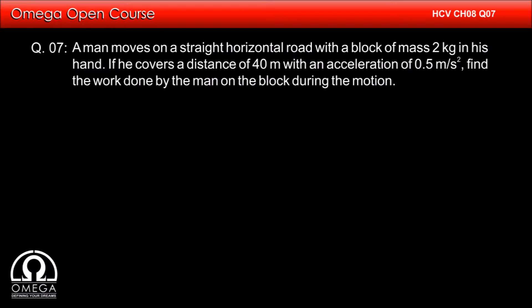A man moves on a straight horizontal road with a block of mass 2 kg in his hand. If he covers a distance of 40 meters with an acceleration of 0.5 meters per second squared, find the work done by the man on the block during the motion.